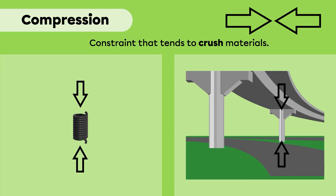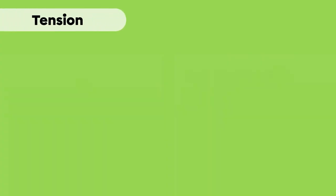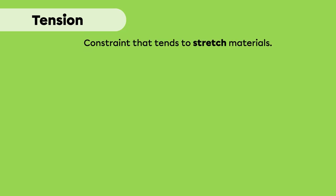Under this pressure, the pillar tends to deform, but depending on the choice of material, the deformation is not visible. Tension, on the other hand, is a constraint that tends to stretch materials. It is the opposite of compression. Tension forces move in opposite directions.